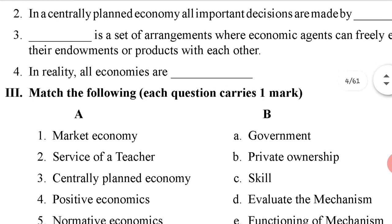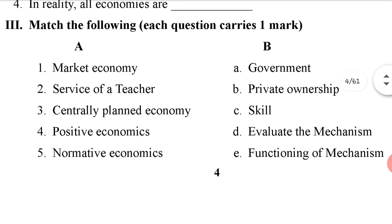Now come to the match the following section, each carrying one mark. Two parts are given: Part A has numbers and Part B has alphabets. In Part A: market economy, service of a teacher, centrally planned economy, positive economics, normative economics. In Part B: government, private ownership, skill, evaluate the mechanism, functioning of mechanism.